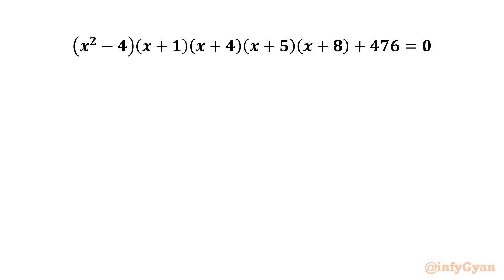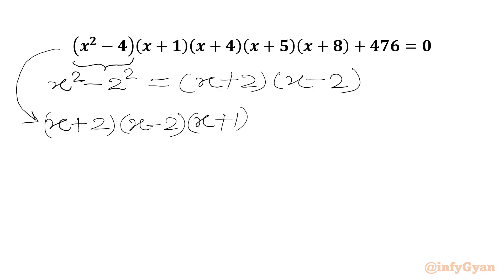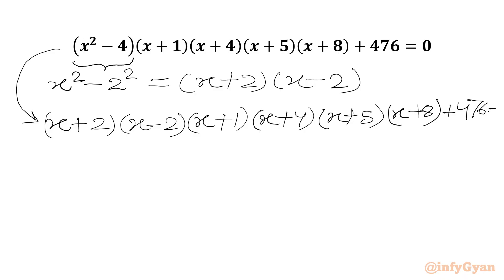Here we are going to find all six solutions. Let us get started by applying the difference of two squares formula, because we can write x² - 4 as x² - 2². We know that a² - b² equals (a + b)(a - b), so we get (x + 2)(x - 2). Now we write our equation: (x + 2)(x - 2)(x + 1)(x + 4)(x + 5)(x + 8) + 476 = 0.